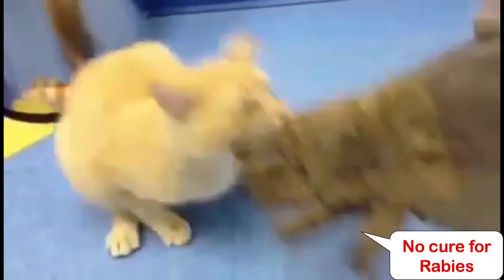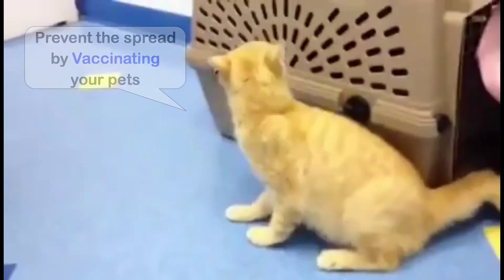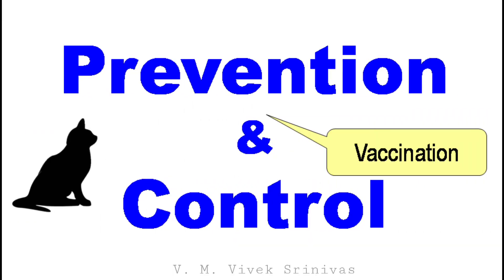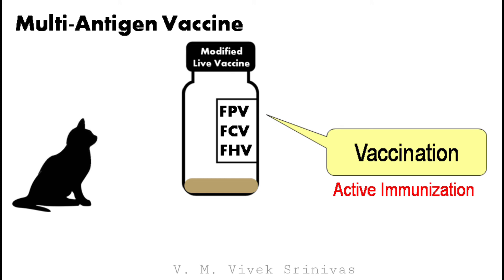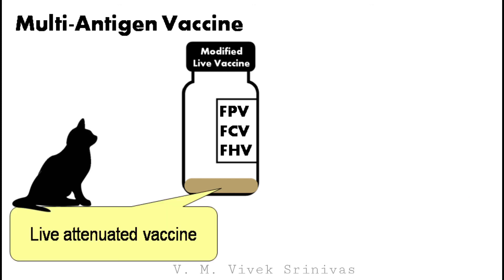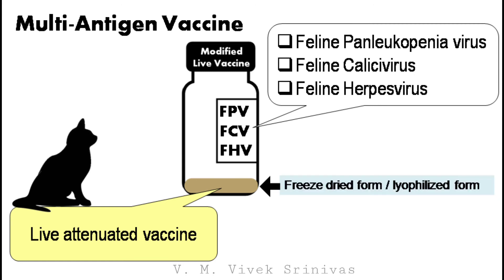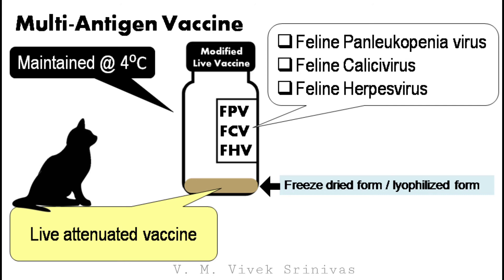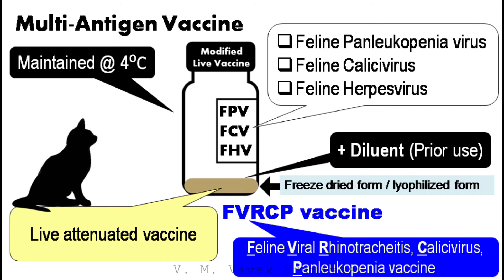There is no cure for rabies if an animal becomes infected, but you can help prevent the spread of this deadly virus by routinely vaccinating your pets. For preventing the first three infections described, a multi-antigen vaccine is used in cats. In this multi-antigen vaccine, the attenuated form of feline panleukopenia virus, feline calicivirus, and feline herpesvirus are used, prepared in a freeze-dried form. This attenuated freeze-dried vaccine is maintained under refrigeration and is injected along with a diluent prior to use. This vaccine is popularly known as the FVRCP vaccine, which confers protection against feline viral rhinotracheitis, calicivirus, and panleukopenia virus.